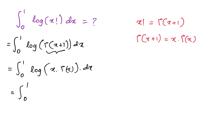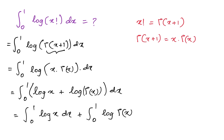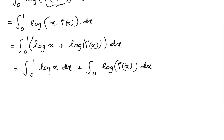According to the property of natural log, we can write this as ln(x) + ln(Γ(x)), so the integral becomes the integral from 0 to 1 of ln(x) dx plus the integral from 0 to 1 of ln(Γ(x)) dx.